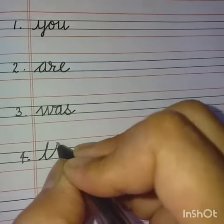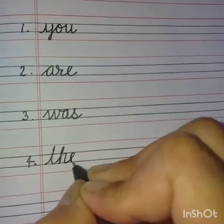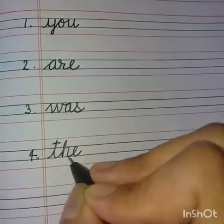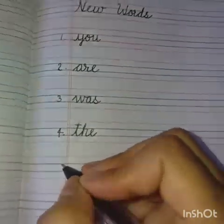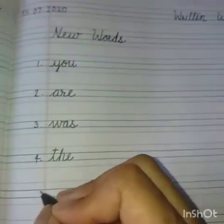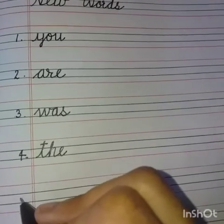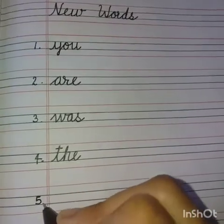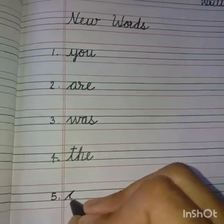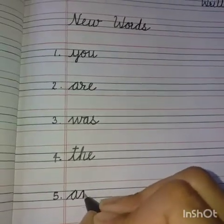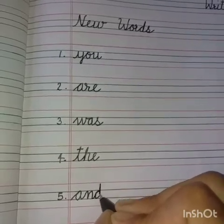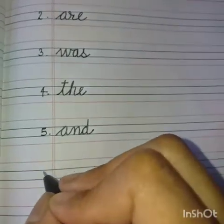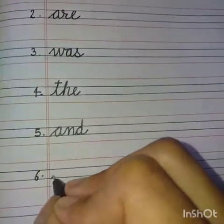Number 4. T-H-E. Cross the T. T-H-E, the. Your writing should be neat and clean. Speak and write. Number 5. A and D, and. Number 6.